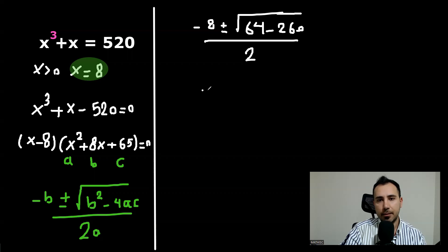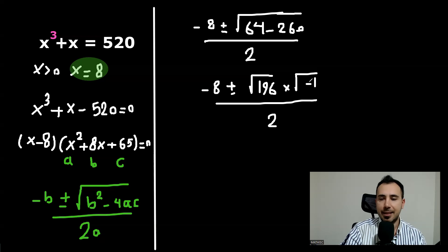And I'm going to write it as square root of 196 multiplied by square root of negative one divided by 2. This is negative one. We're going to write this as i because it's the complex number. And this will be 14. So the final answer would be negative four positive negative seven i.